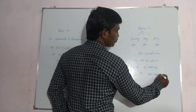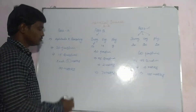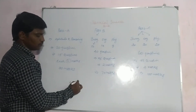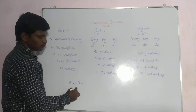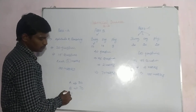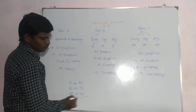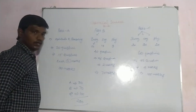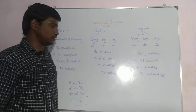So, Part A gives you 30 marks, Part B gives you 70 marks, and Part C gives you 100 marks. Totally, you are writing for 200 marks in your CSIR examinations.